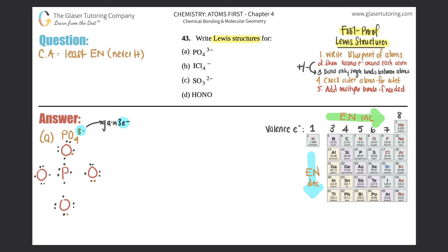Now I'll form single bonds between atoms — one electron from oxygen, one from phosphorus, that's a bond. I do this for all four oxygens. Then check your outer atoms for the octet — eight electrons. Remember, hydrogen only wants a max of two, and neutral boron wants a max of six. Checking: this oxygen has two, four, six, eight — good. This oxygen has two, four, six, eight — good.